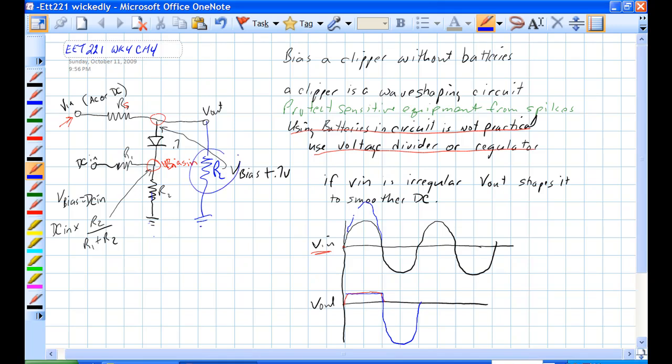If this circuit, whatever this RL is, can't handle this kind of voltage here, then this circuit will regulate it and keep it from going any higher than bias plus 0.7 volts. It goes up to bias plus 0.7, holds it steady, and then back down.